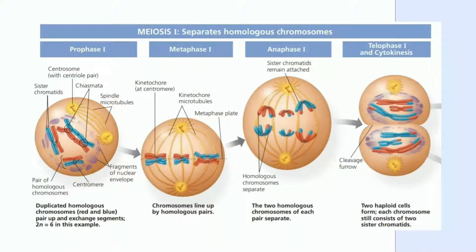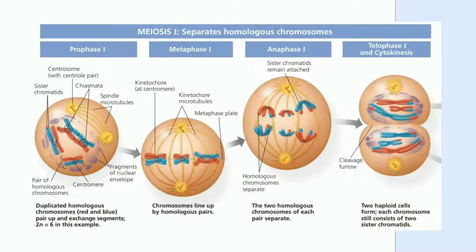Selanjutnya ada metafase I. Pada metafase I, tetrad berbaris pada lempeng metafase dengan sentromer mengarah pada kutub-kutub yang berlawanan. Mikrotubulus dari satu kutub melekat pada kinetokor satu kromosom dari masing-masing tetrad, kemudian mikrotubulus dari kutub lainnya melekat pada kinetokor kromosom lainnya. Pada anafase I, kromosom homolog terpisah dan bergerak ke masing-masing kutub. Sister kromatid tetap melekat pada sentromer dan bergerak sebagai satu kesatuan menuju kutubnya.